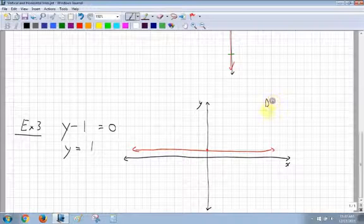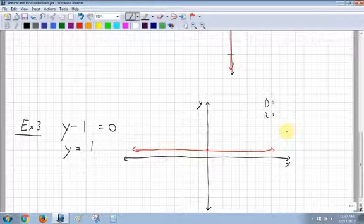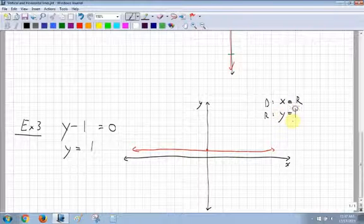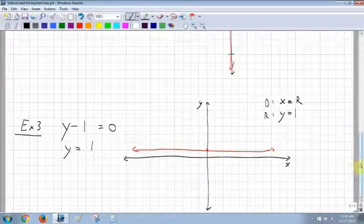We've seen above with the domain and range for these y equals values. The domain is all my possible x values, so that's going to be x is an element of all real numbers, because it covers everything. For the range, the range is only that one value of 1.